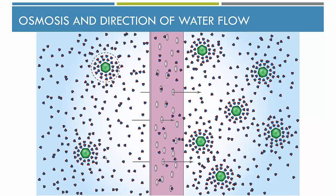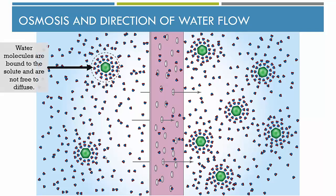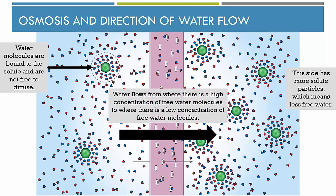The next set of questions is about transport. Let's talk about osmosis and why water flows. Looking at this picture, the green hexagons are glucose molecules — one side of the membrane has more glucose than the other. The membrane has small holes, and water is small enough to pass through, but glucose molecules are too big. Around each glucose solute, water molecules are bound and not free to diffuse. The side with more solute particles has more water bound up and less free water. So water flows from where there is a high concentration of free water to where there is a low concentration of free water.